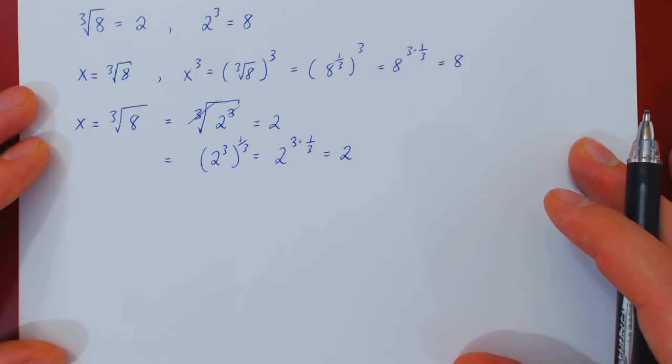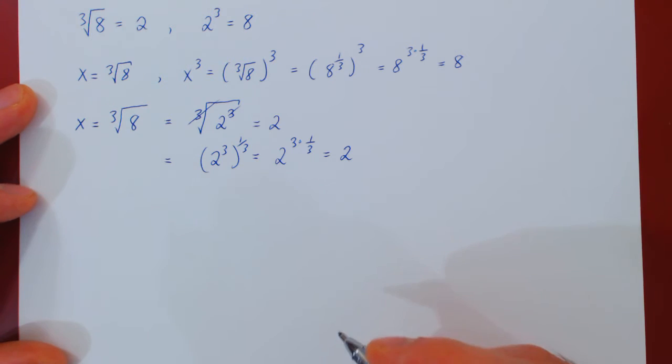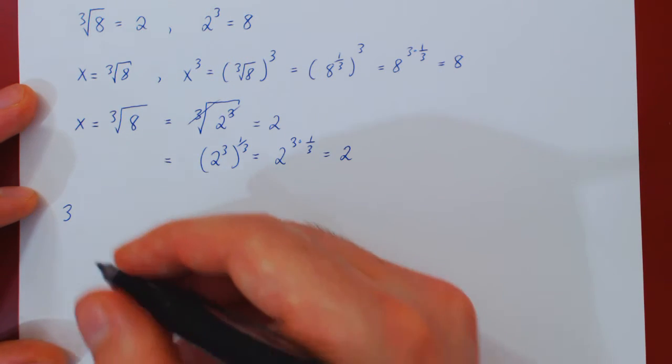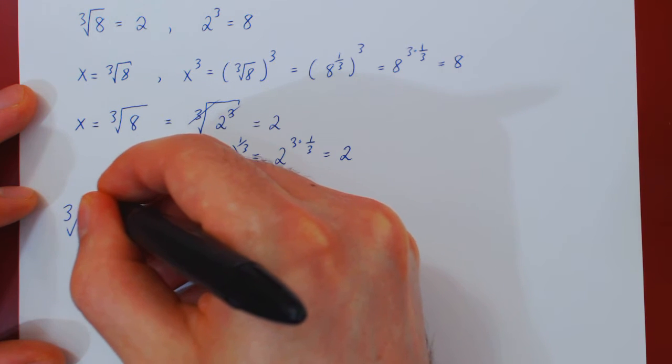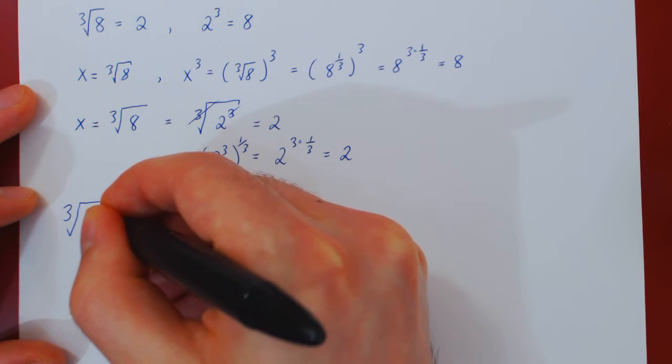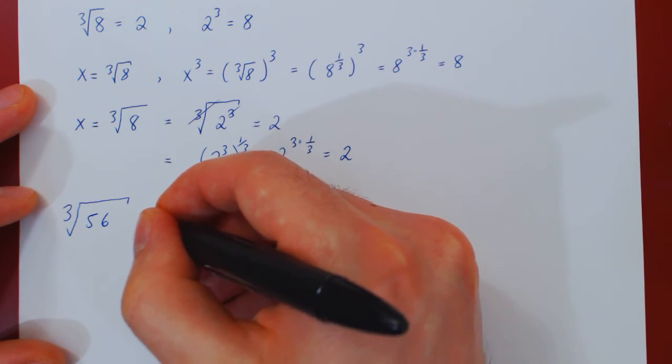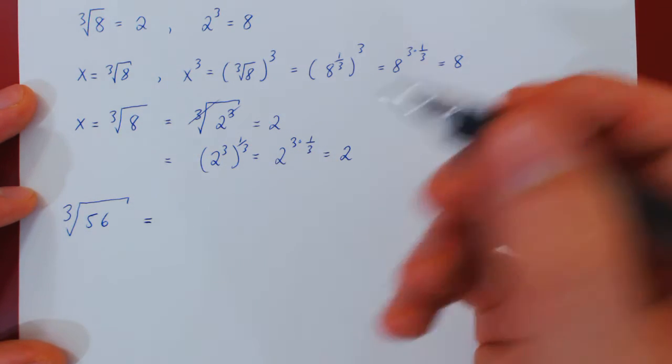So let's look now at two less trivial examples. What if we ask to simplify the cube root, say, of 56? Well, thinking of factoring 56,